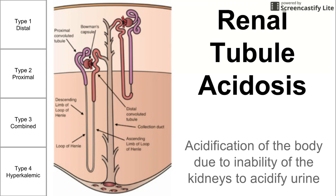Before we start talking about the four types of RTA, renal tubular acidosis, we're going to go over this simple picture of a nephron. We start with the glomerulus, which leads into the proximal convoluted tubule, down into the Loop of Henle, down into the medulla, up back into the cortex. We have a distal convoluted tubule, then down into the collecting duct, which collects into the ureter, goes through the urethra, and out as urine.